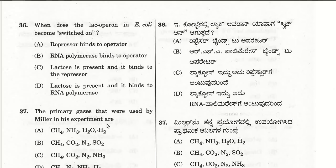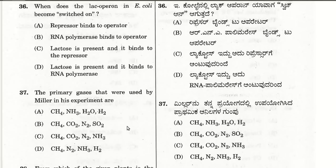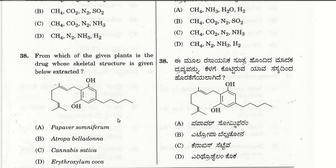The thirty-seventh question: the primary gases used by Miller in his experiment are ammonia, methane, water, and hydrogen gas. So choice A is the answer for question 37.